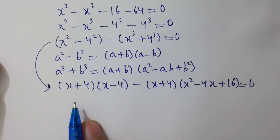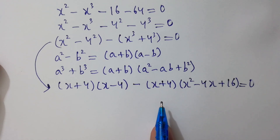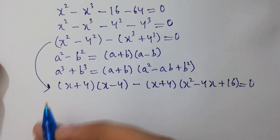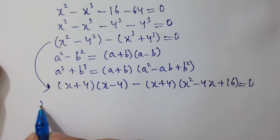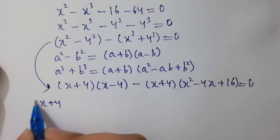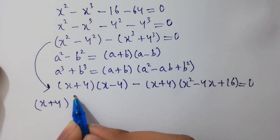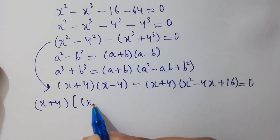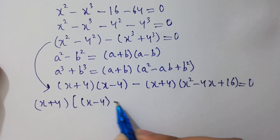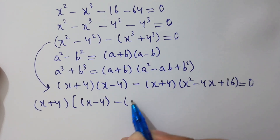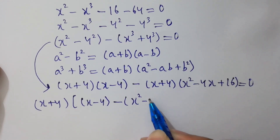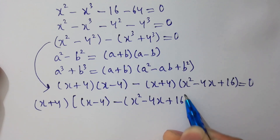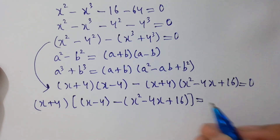Here x plus 4 and x plus 4 are common, so factoring out (x plus 4): we get (x plus 4) times [(x minus 4) minus (x squared minus 4x plus 16)] equals 0.